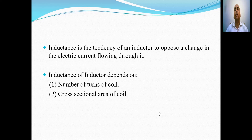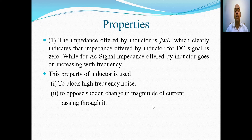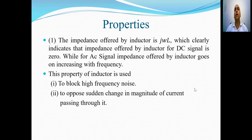The parameter of interest of an inductor is inductance. Inductance is the tendency of an inductor to oppose a change in electrical current flowing through it. The inductance of an inductor depends upon the number of turns of the coil and the cross-sectional area of the coil. The impedance offered by an inductor is jωL, where L is the inductance and ω is the angular frequency of the applied signal.